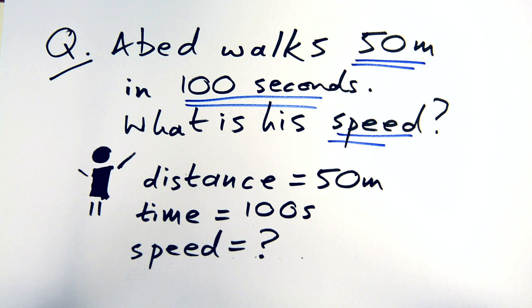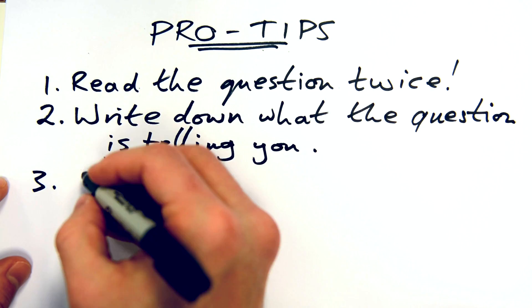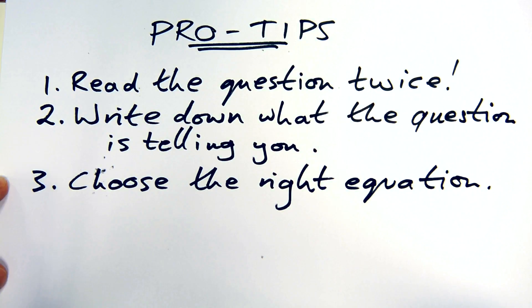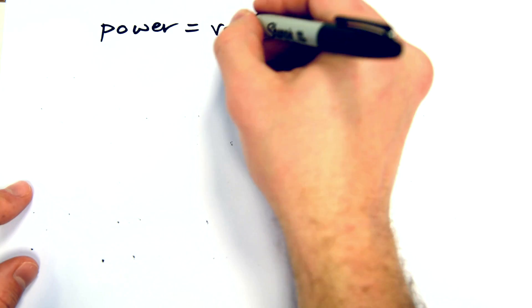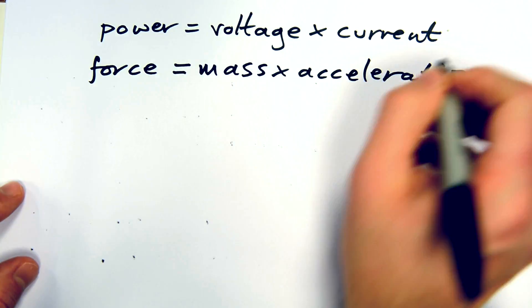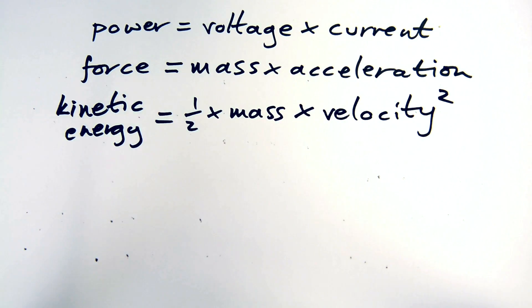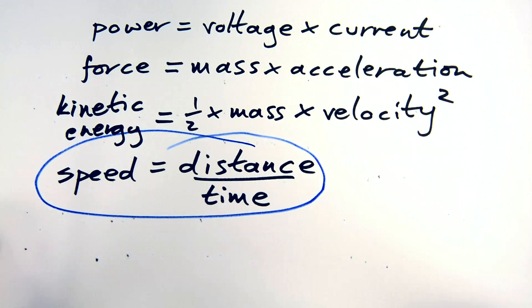Now that we've got all the information lined up, we need to consult the formula sheet, which when in an exam is usually at the front of the booklet. One of the great things about physics is that you don't actually have to remember many equations at all, they're all given to you. Which equation has speed, distance and time in? This last one here.